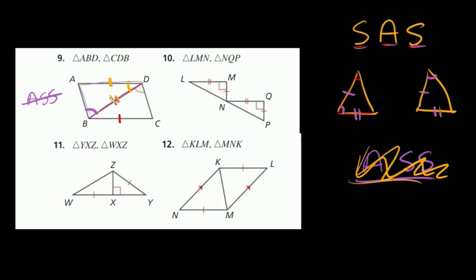What about number 10? Triangle LMN and triangle NQP. Here we can see this side is congruent to this side, this side is congruent to this side, and we also have an angle in between the two sides — it just happens to be a right angle, a 90-degree angle. In either case, we have side angle side, so we can say these two triangles are definitely congruent using side angle side.